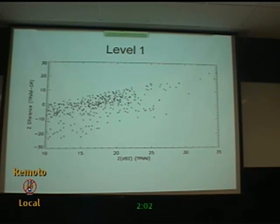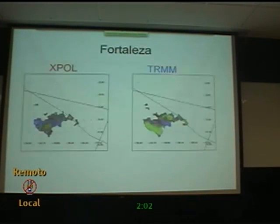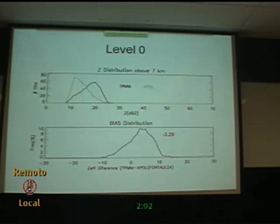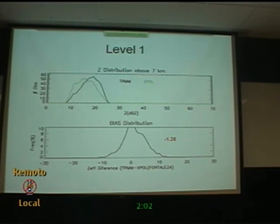For Fortaleza, which is a different environment with more warm clouds but also some deep convection and stratiform cases, the distributions are more spread and we can see two distinct PDFs for the X-band radar. The bias offset is now negative, around minus 1 dB. After the attenuation correction, as expected, the reflectivity values increase and the bias shifts to around minus 1.4 dB. The dispersion diagrams again show the same reflectivity-dependent behavior that we need to investigate for both level zero and level one.